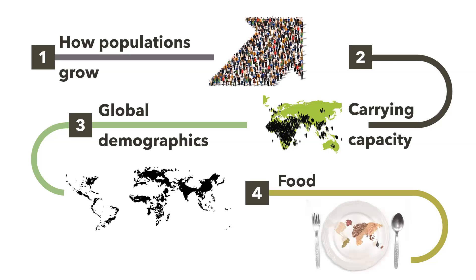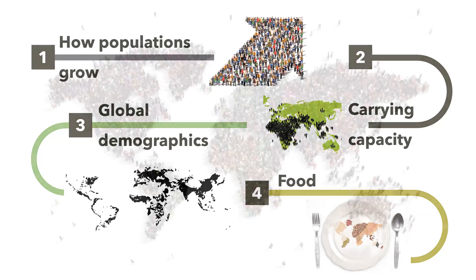We're going to make the link between people and food — nine and a half billion people probably want to eat, so there's a very important food component. I'm going to tie food into the population topic. Food will also pop up when we look at land degradation — if we're losing soil, we need soil to grow food. If we're over-fertilizing crops, that impacts our food production. So that's the roadmap.